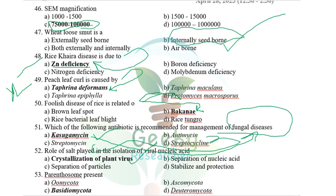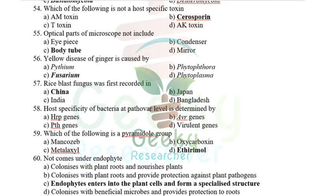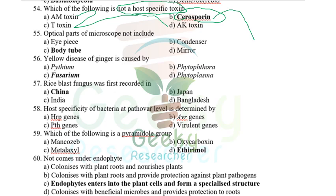Parenthesome is especially observed in Basidiomycota group of fungi. Which of the following is NOT a host-specific toxin? AM toxin, T-toxin, and HC toxin are host-specific toxins. Cercosporin is a non-host-specific toxin — the answer is cercosporin.